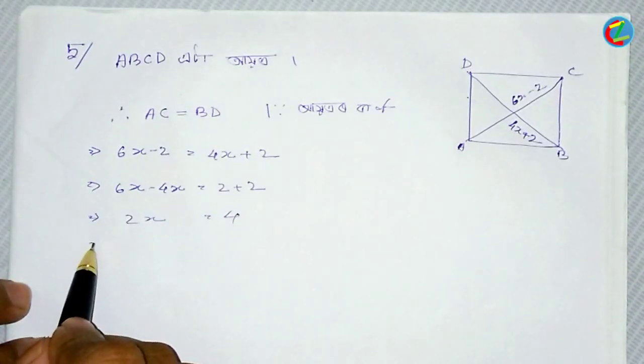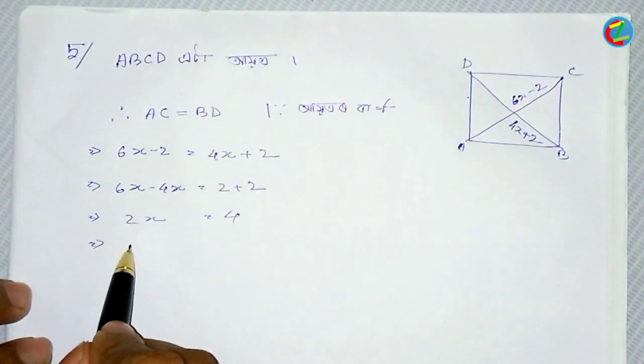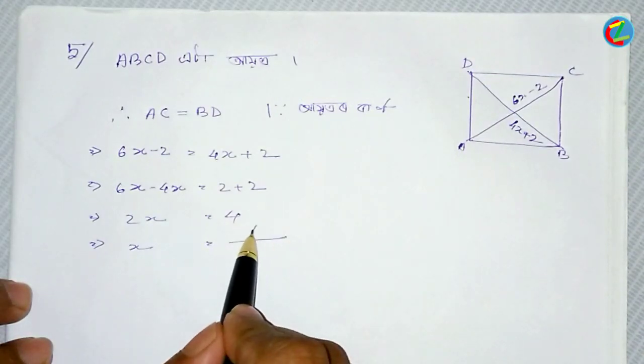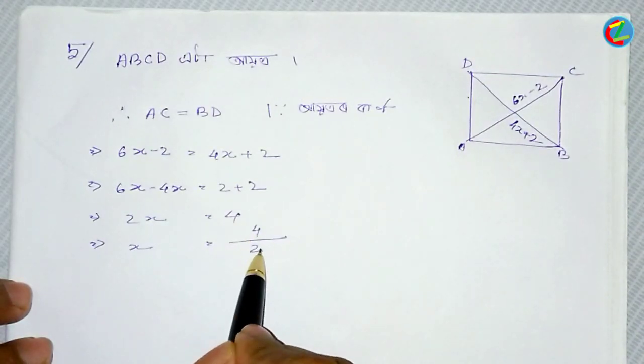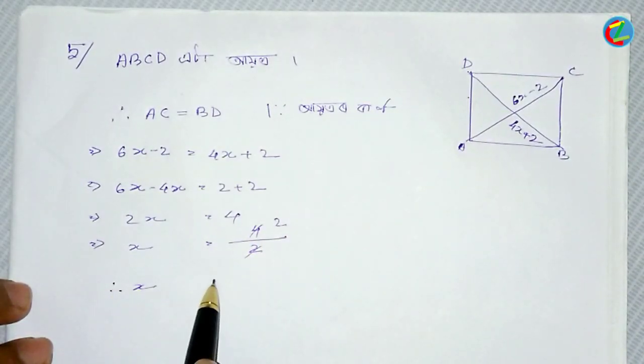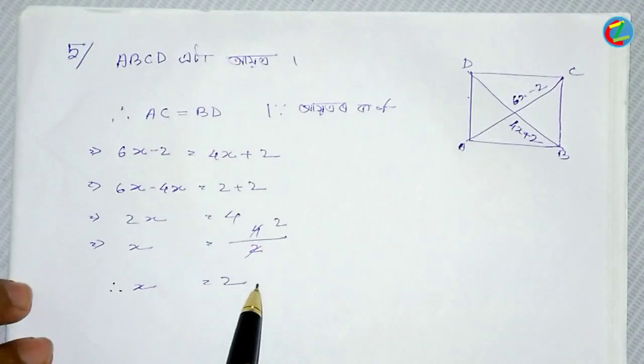6x minus 4x, minus 2 is equal to 2; 2 plus 2 is equal to 4. Ultimately, x is equal to 4 divided by 2, and x is equal to 2.